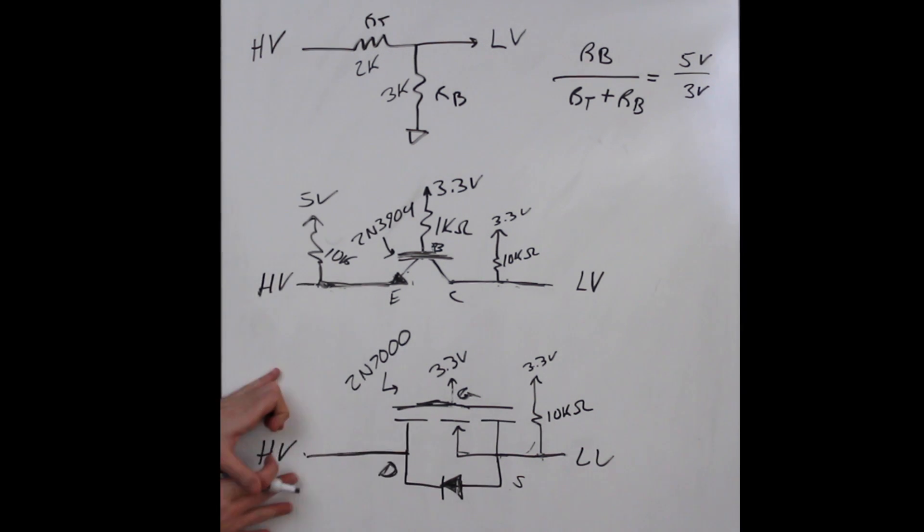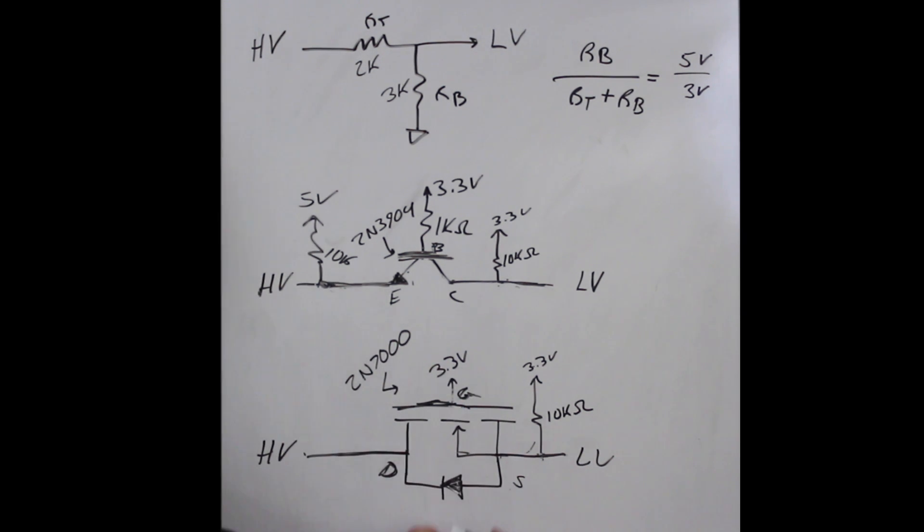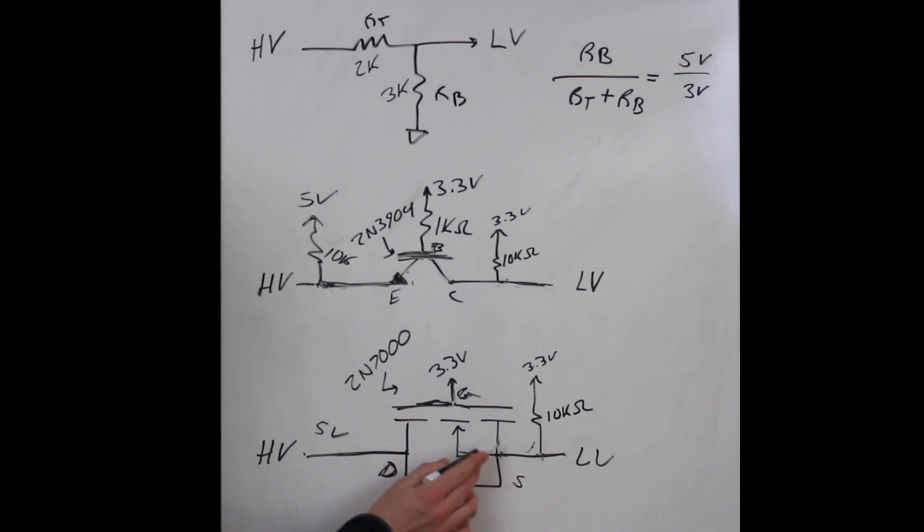From high voltage to low voltage: if this was at 5 volts here, this diode is blocking that. The MOSFET looks like it might be on since we have 3.3 connected to the gate, but if you look at it, it's all about VGS. This point is at 3.3, so your VGS is 0 volts, so it's actually off.